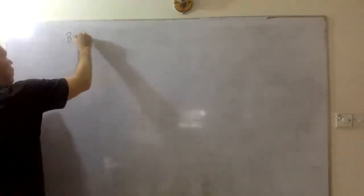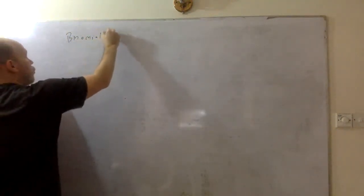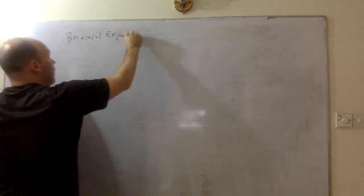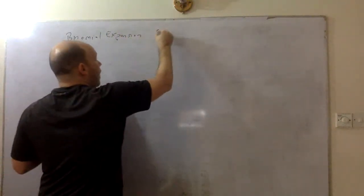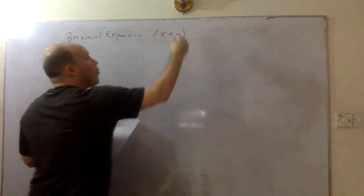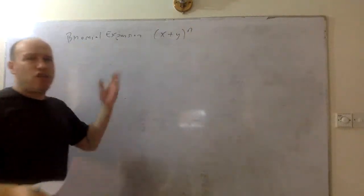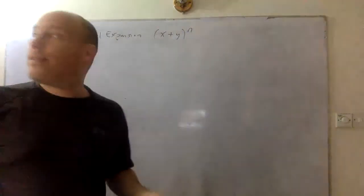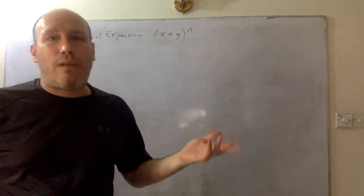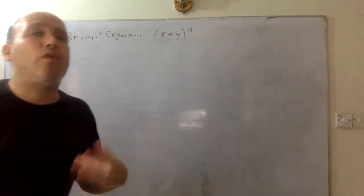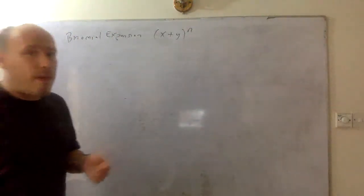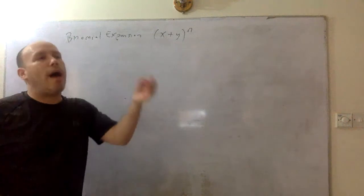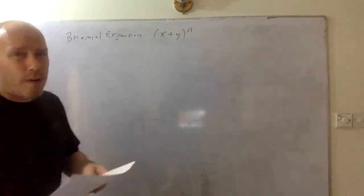So, binomial expansion. The idea is we're taking a binomial and raising it to a power. You know how to raise it to the first or second power — maybe using the FOIL method or other methods of multiplying polynomials together — but we want a fast method.